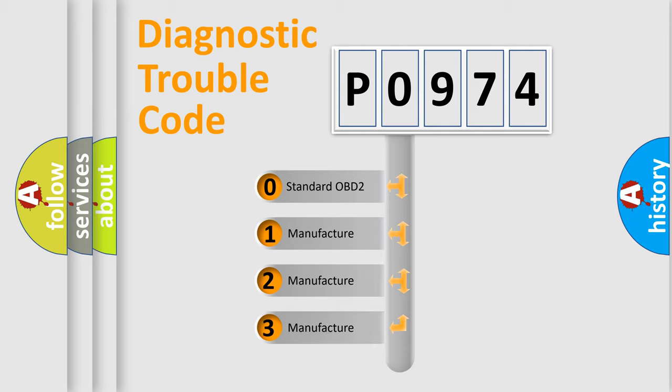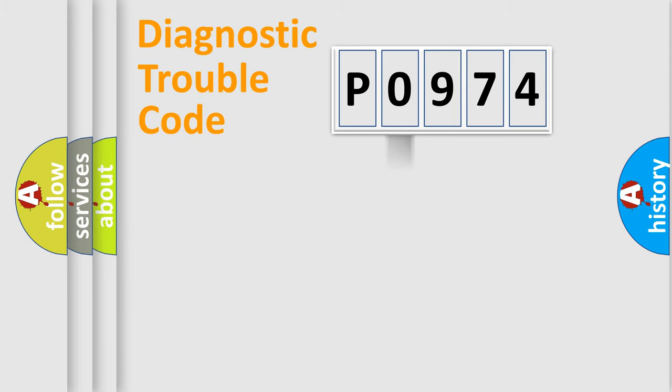If the second character is expressed as zero, it is a standardized error. In the case of numbers 1, 2, or 3, it is a manufacturer-specific expression of the car-specific error.